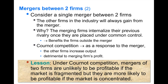The reduction in quantity by the merging firms is beneficial for the outside firms, because lower quantity on the market means a higher price. Moreover, in a Cournot market, firms have reaction functions with a downward slope, meaning that when the merged firms decrease their quantities, the outside firms react by increasing their quantities — we have strategic substitutes.